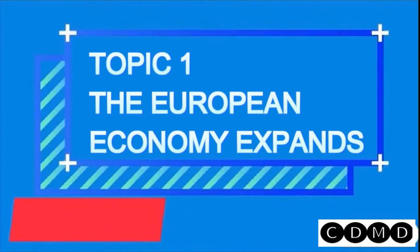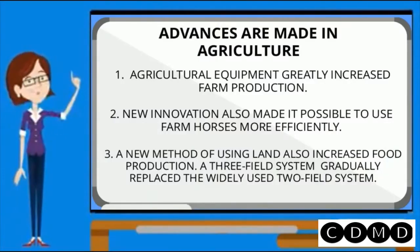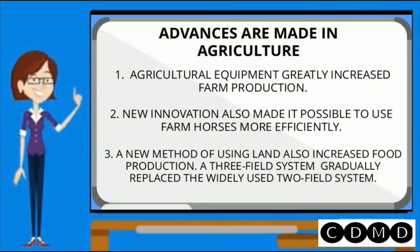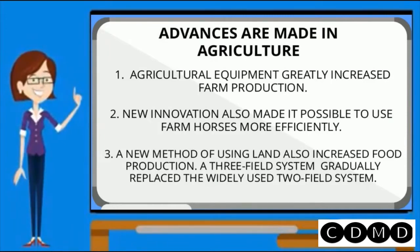Topic 1: The European Economy Expands. Advances are made in agriculture. New improvements made it possible to use farm horses more efficiently. A new method of using land also increased food production. A three-field system gradually replaced the widely used two-field system.